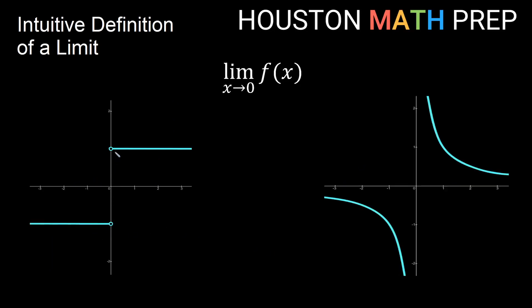Over here, we have a similar thing — it's not defined at x equals 0, and we have two separate pieces of the function, which is an additional strange thing happening near x equals 0. For the one on the right, as we get closer and closer from the left to x equals 0, the graph goes down without bound. And from the right side of x equals 0, we are continuing up without bound, increasing forever as we approach from the right side.